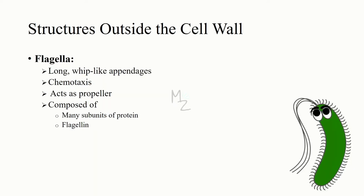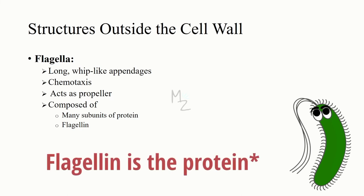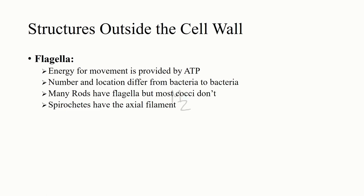Next up is flagella. Flagella are long, whip-like appendages that move the bacteria towards nutrients and other attractants — a process called chemotaxis. The long filament, which acts as a propeller, is composed of many subunits of the protein flagellin arranged in several intertwined chains. The energy for movement, the proton motive force, is provided by ATP and is derived from the passage of ions across the membrane. The number and location of flagella vary from bacterium to bacterium. Many rods have flagella, but most cocci do not. Spirochetes have an axial filament.